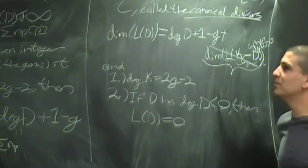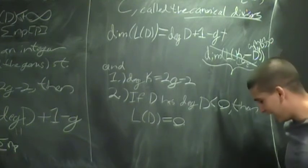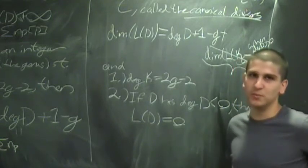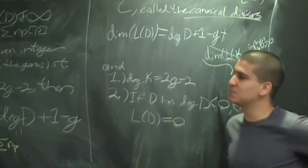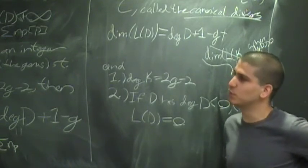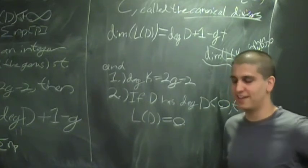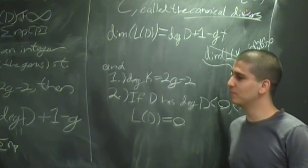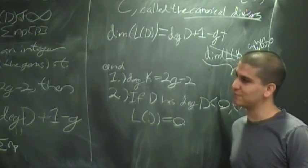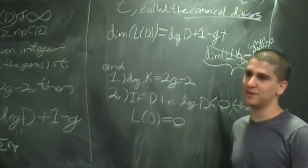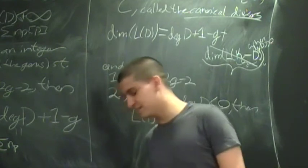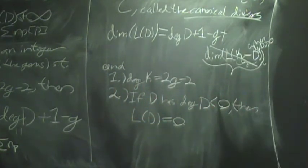On Friday we're going to use the Riemann-Roch theorem to define a special subset of a curve called the Weierstrass points, and use that to prove that most curves only have finitely many automorphisms — a cool theorem that allows us to classify all the different curves that have group structures.